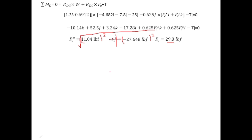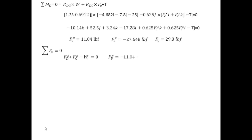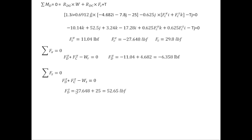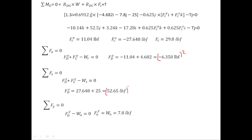For reactions at bearing D, summing forces in x: FdX + FcX − Wr = 0 → FdX = −6.35 lbf. Summing forces in z: FdZ + FcZ − Wt = 0 → FdZ = 52.65 lbf. Summing forces in y: FdY − Wa = 0 → FdY = Wa = 7.8 lbf. The total reaction at D: Fd = √(FdX² + FdZ² + FdY²) = 53.6 lbf.